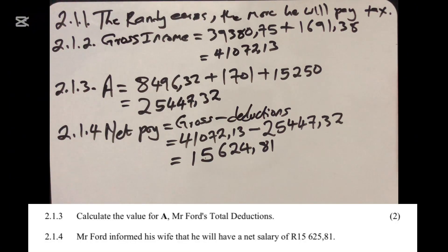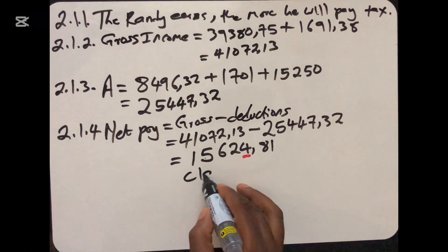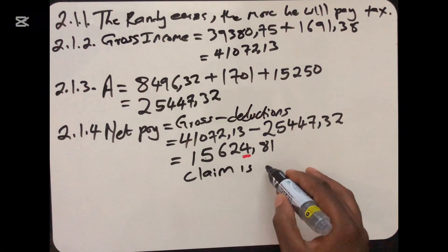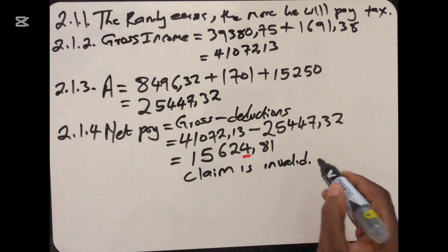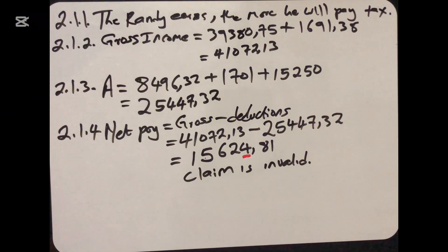They want us to verify because he told his wife he would earn a net payment of R15,625. But when we do the calculation, we find R15,624 — there is a difference of one rand. So for that reason, the claim is invalid. The claim is invalid because his net payment is one rand less than what he stated to his wife.